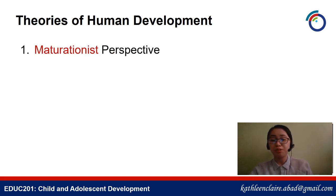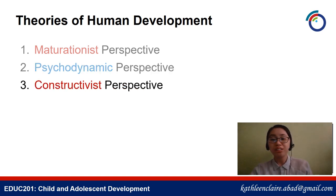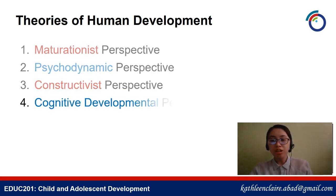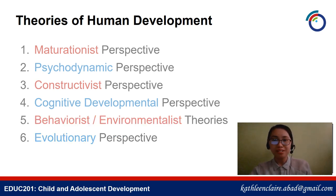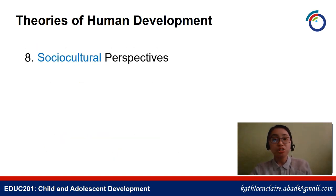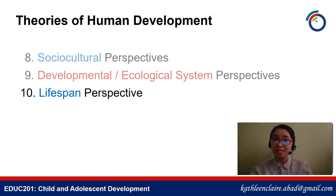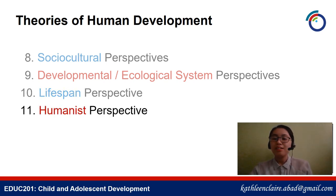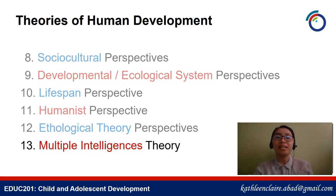The 13 theories are: first, the maturationist perspective; second, the psychodynamic perspective; third, the constructivist perspective; fourth, the cognitive developmental perspective; fifth, behaviorist or environmentalist theories; sixth, the evolutionary perspective; seventh, the information processing perspective; eighth, sociocultural perspectives; ninth, developmental or ecological system perspectives; tenth, lifespan perspectives; eleventh, the humanist perspective; twelfth, the ethological theory perspective; and last, the multiple intelligences theory.